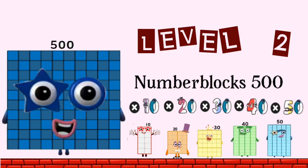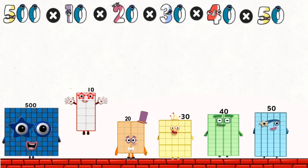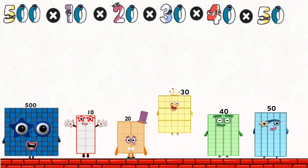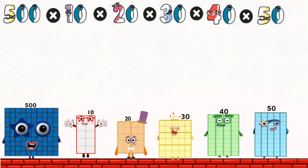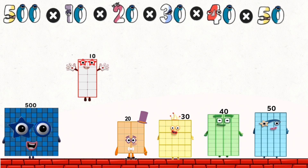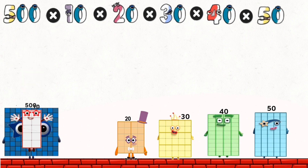Level 2. Number blocks: 500 times 10 to 50. 500 times 10 equals 5,000.